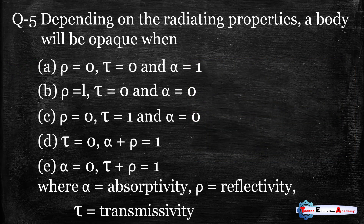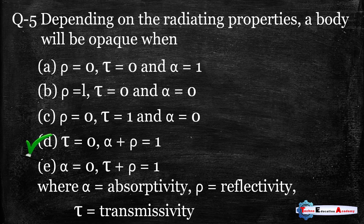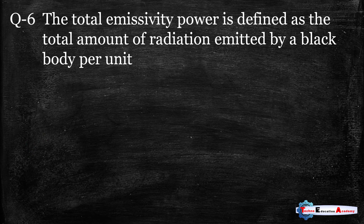Question number five: depending on the radiating properties, a body will be opaque when — tau equals zero and alpha plus rho equals one. In an opaque body, it will not transmit the radiation, and the sum of alpha plus rho equals one. The right answer is option B.